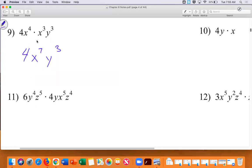Now, number 10 said four y times x. Was there anything to combine here? No. We just had a four y and an x. We can't combine like y and an x. So this was just four x y or four y x. I like writing things alphabetical.